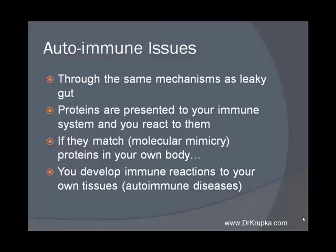Now autoimmune issues. This is a prevailing theory, especially among functional medicine practitioners, and there's a reason why it's a prevailing theory — mainly because it appears to be correct. Through the same mechanisms as leaky gut, proteins are presented to your immune system and you react to them. But we only have a certain number of amino acids to work with when we build proteins. I tell patients, think of these like different colored Lego blocks. Eventually, if the same color sequence from your food proteins shows up in any of your resident body proteins, you have what's called molecular mimicry — where the proteins coming through have the same amino acid sequence as the proteins in your body. Those immune cells targeted toward the proteins coming in through your diet can also attack the proteins that exist in your body. When this relationship occurs, you develop immune reactions against your own tissues — that's called an autoimmune disease.